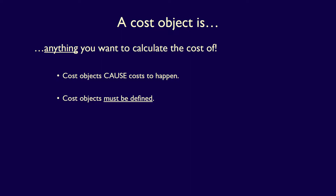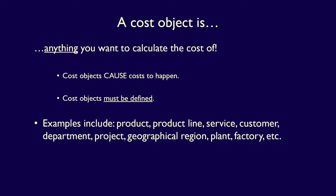Because you can't accumulate costs unless you know what the cost object is that you are accumulating costs for. We can define the cost object as a product, or a product line, or a service, or a customer, a department, a project, a geographical region, a factory — the list goes on. We have to define the cost object so we know which costs to accumulate.